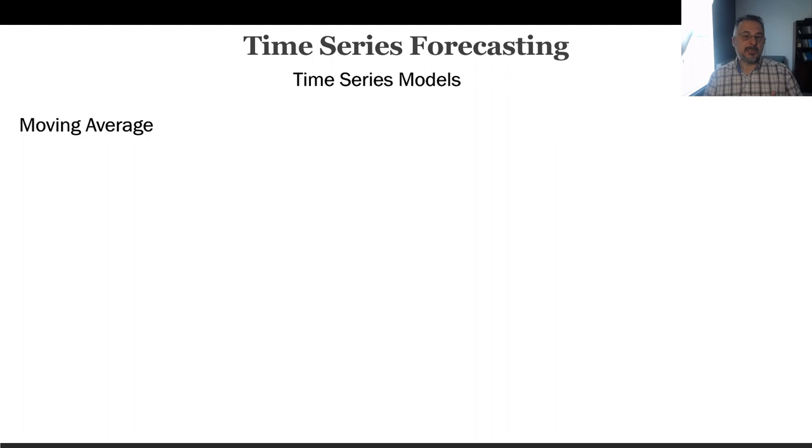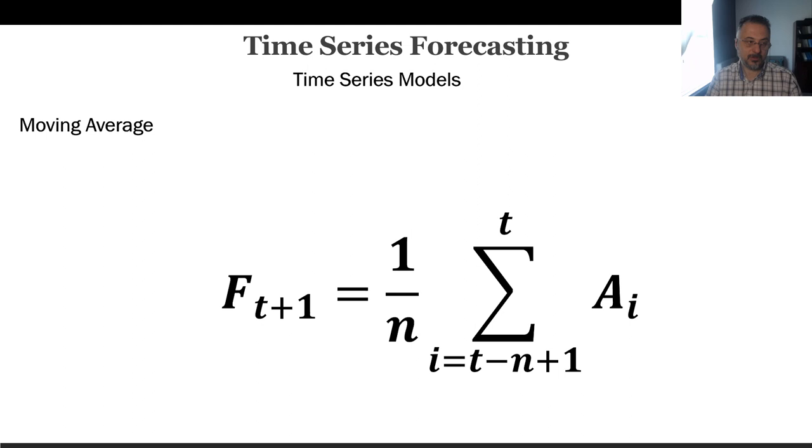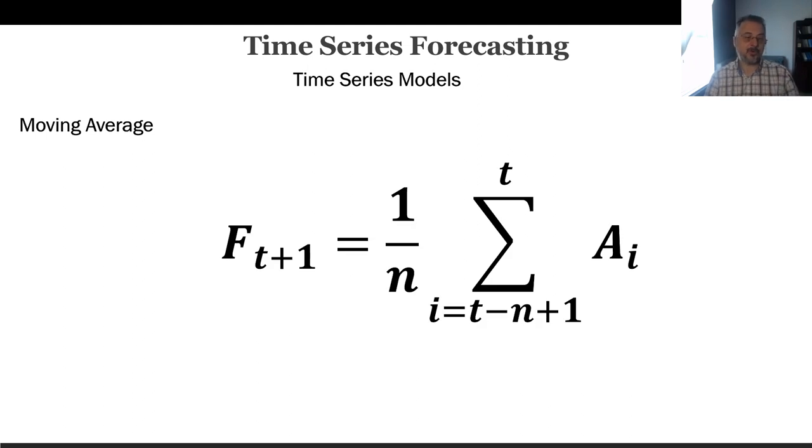The moving average is a simple forecasting technique that calculates the average of fixed number of past observations and uses that to forecast future values. It takes average of window of the n most recent observation in the time series. For example, a two-period moving average uses the average of the most recent two values. If we turn this better mathematical notation, we can use this for all kinds of n's.